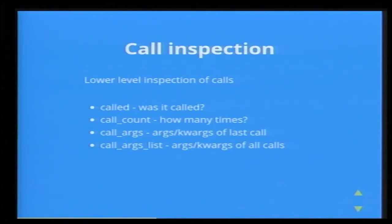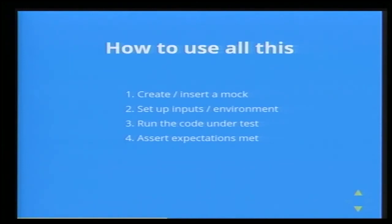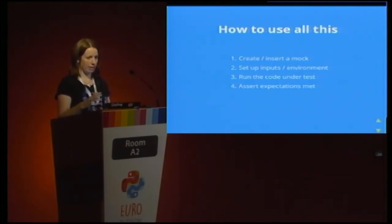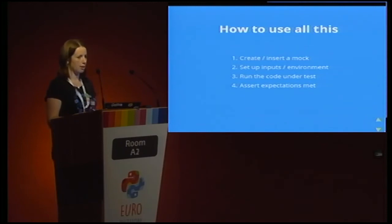You can have even more control over the inspection of your calls — maybe you want to work at a lower level. You can ask: was this mock called? How many times was it called? And get raw access to all the arguments it was called with. As a general pattern, we'll be creating a mock and making sure it's in the right place, then setting up the values on it — the environment for your test — then running the code under test, and then checking that our expectations have been met.